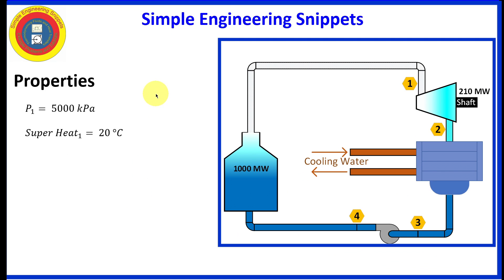Some of the known properties: Point one is at 5000 kilopascals and it is superheated by 20 degrees Celsius. Point two, the pressure of the condenser is 15 kilopascals. And point three is also 15 kilopascals and is subcooled 5 degrees Celsius. And the pump takes us back up to 5000 kPa at point four.